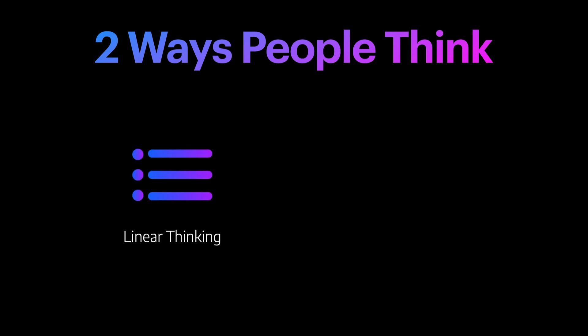Before we get too deep into the app itself, I want to explain the difference between linear and visual thinking, as that is at the heart of why I think Skrintle is so darn cool. There are two main ways that people think about the information they collect into their personal knowledge management, or PKM, systems. The first approach is linear thinking, where one thing leads to the next, and then to the next, in a specific order.